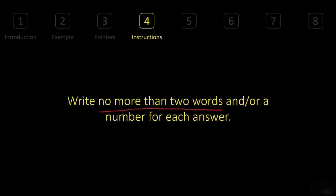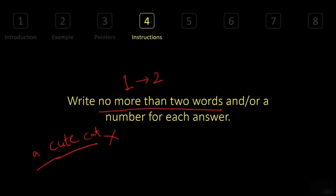'No more than two words' means you cannot go beyond two words — you can write one word or two words. For example, 'cute cat' is correct; 'a cute cat' is incorrect. If the instruction says 'not more than four words,' then you can have one, two, three, or four words maximum. Now what about the 'and/or a number' part — it means you can add a number to those words if the answer is a number.